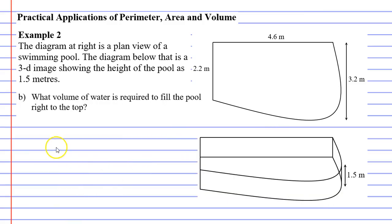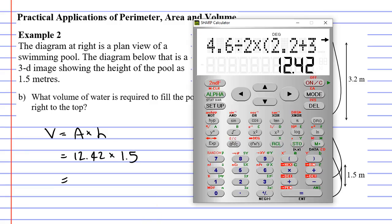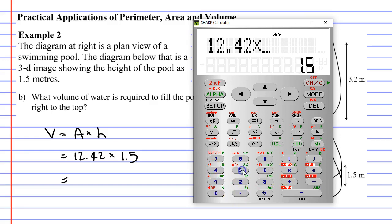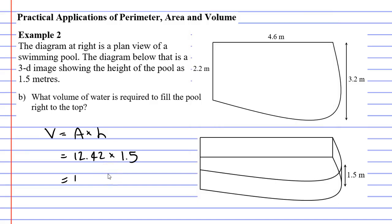Let's now move on to part B, which says: what volume of water is required to fill the pool right to the top? We've actually done all the hard work by finding the area, because volume is just area times height. Our area from before was approximately 12.42, and the height of the pool is 1.5 metres, as we can see in the bottom right image. So we just multiply them together: 12.42 times 1.5 equals 18.63 metres cubed.